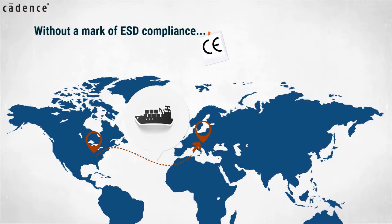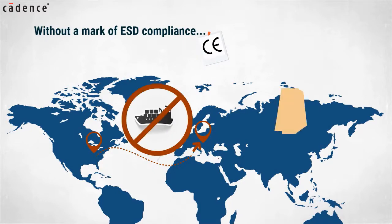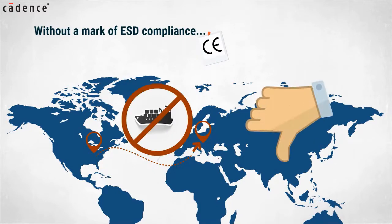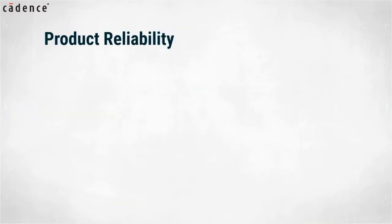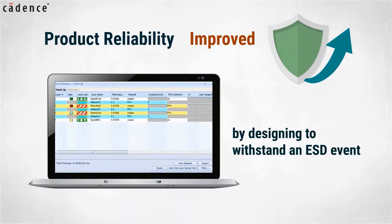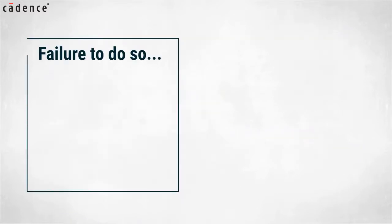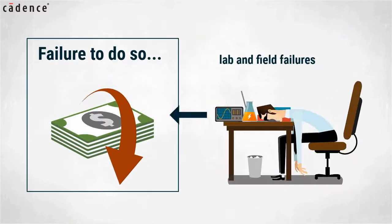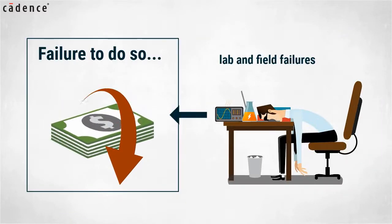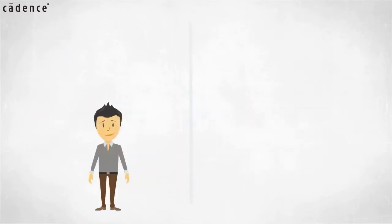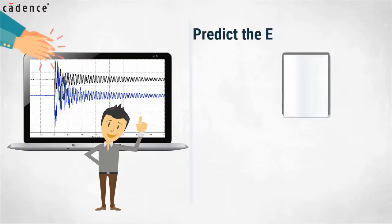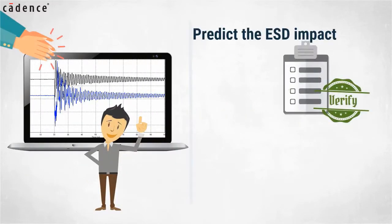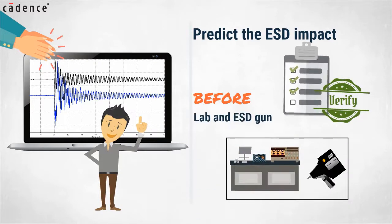Without a mark of ESD compliance, products will not be able to be sold in some countries. With or without a compliance test, product reliability can be improved by designing to withstand an ESD event. Failing to do so can impact profits due to lab and field failures. Our video today will show you how design teams can predict the ESD impact before going to the lab and testing using an ESD gun.